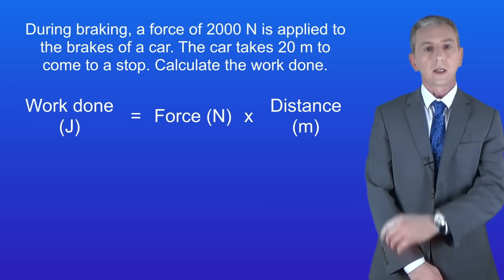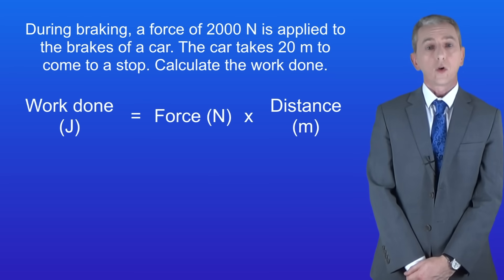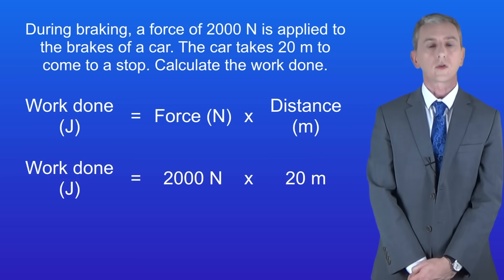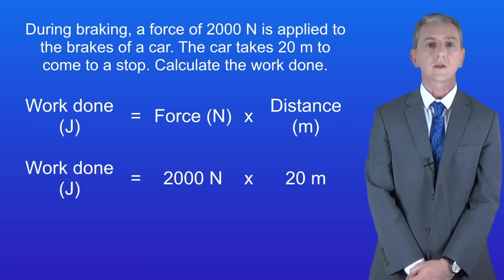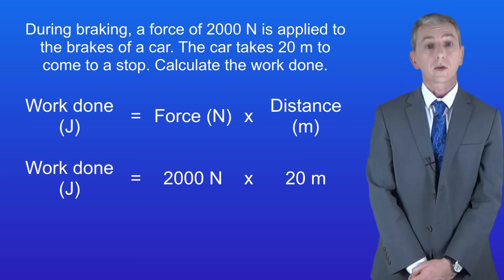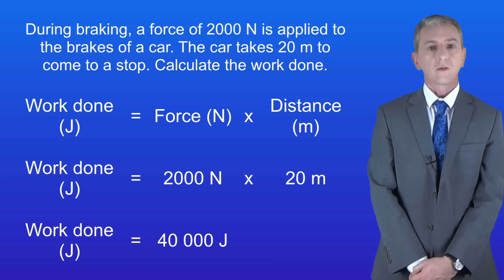Okay, here's the equation that you need. Work done equals the force multiplied by the distance. In this case the force is 2,000 newtons and the distance is 20 meters. Multiplying 2,000 by 20 gives us a work done of 40,000 joules. And that's our final answer.